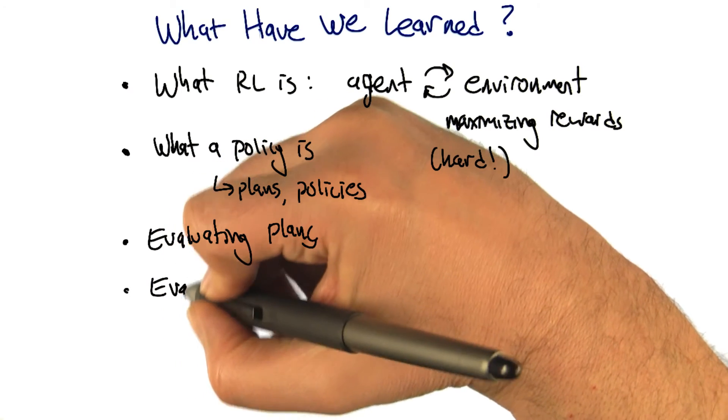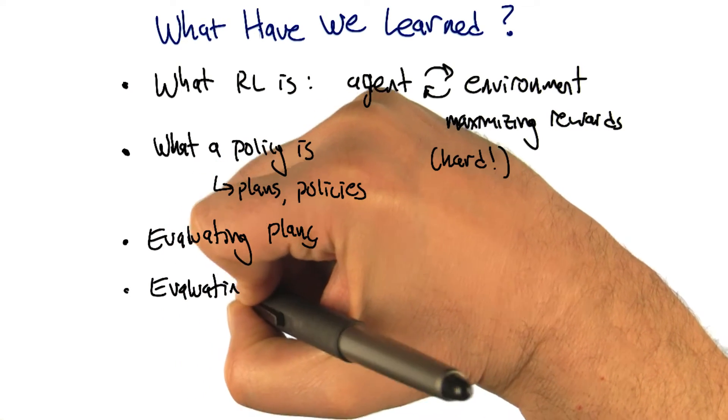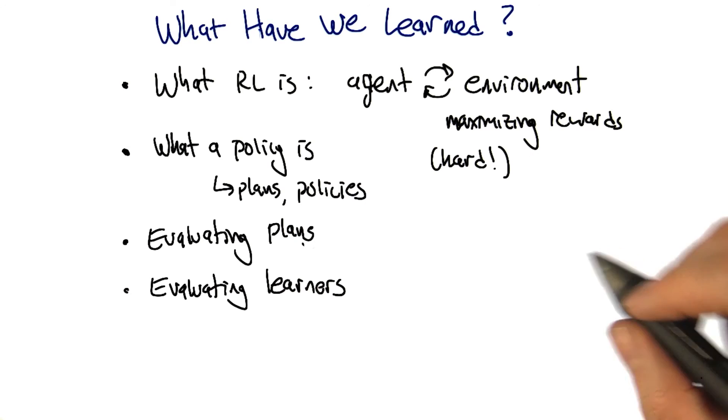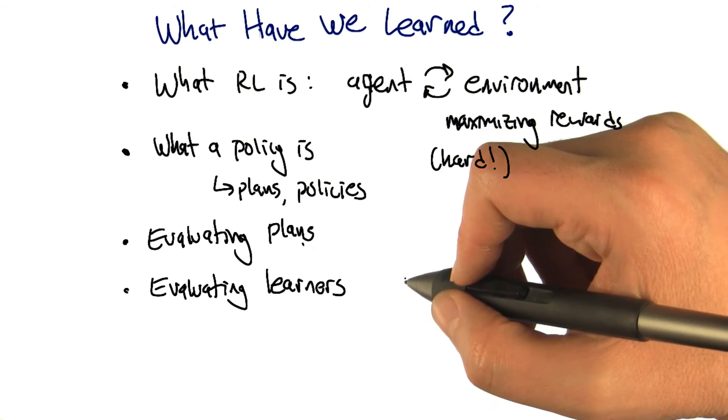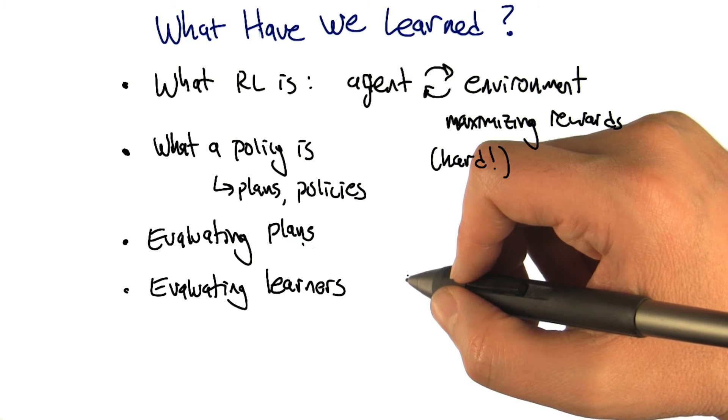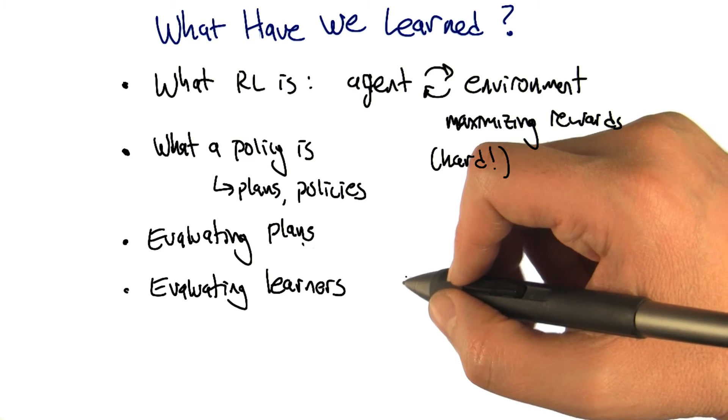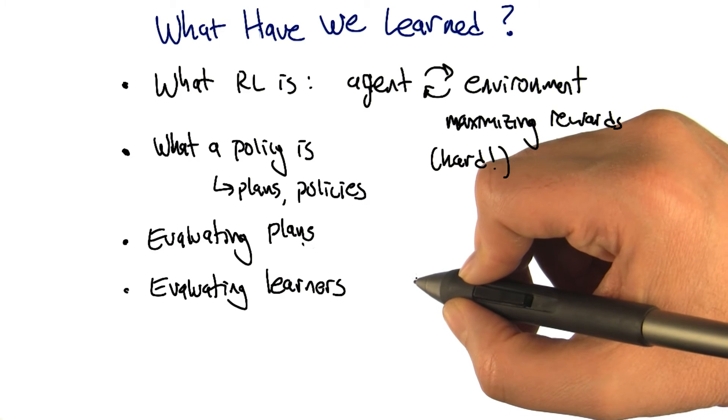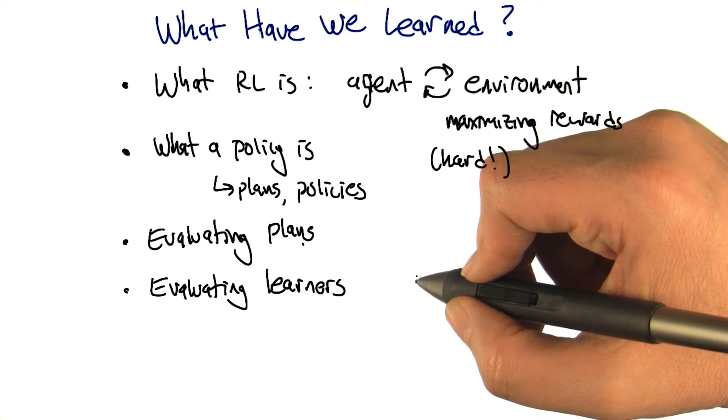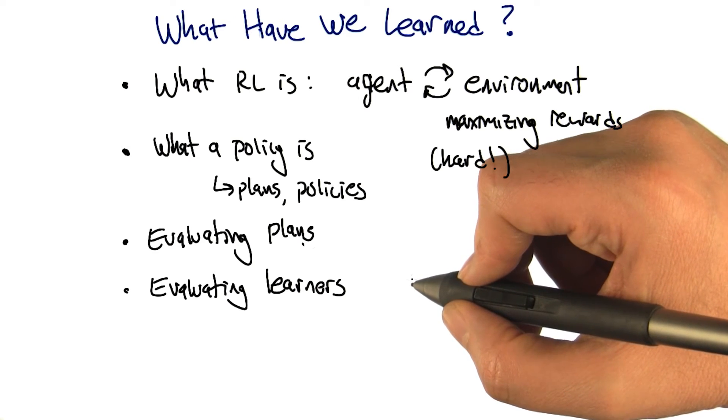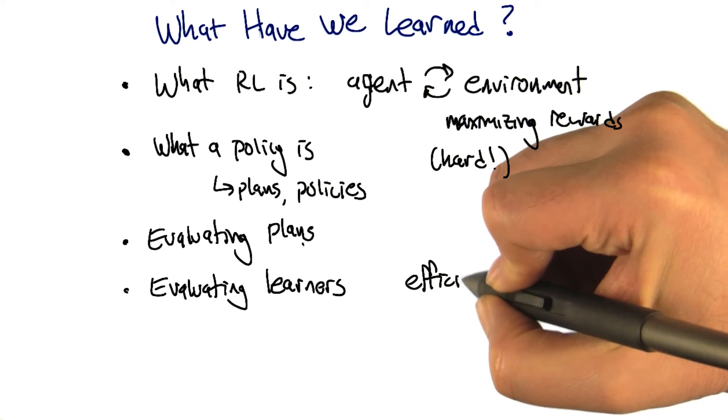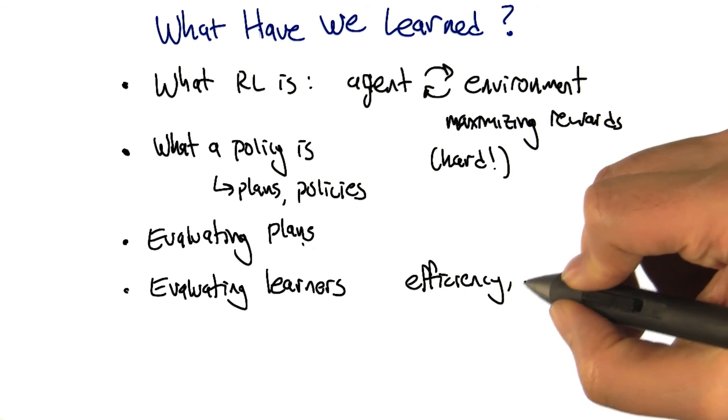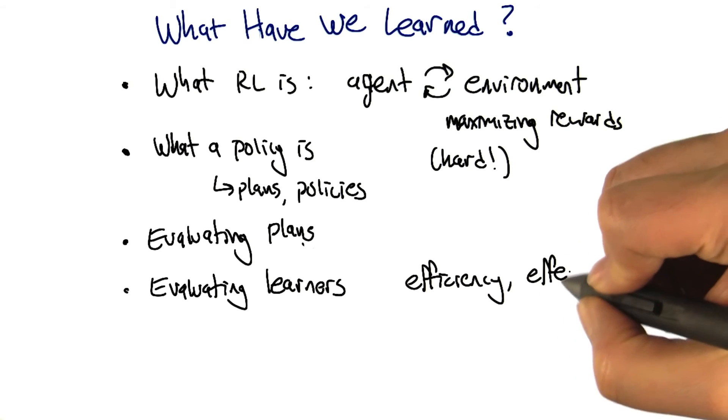Right, and then the third class of things that we learned was about evaluating learners. And we realized that there are lots of different ways to evaluate learners, just like there's lots of different ways to evaluate policies and plans. You can talk about truncating them or doing things that are infinite. We can talk about whether a learner is fast, whether a learner is efficient in a different sense, like with sample complexity, whether it actually returns good values. You can think about it just in terms of its output or how it got to its output.